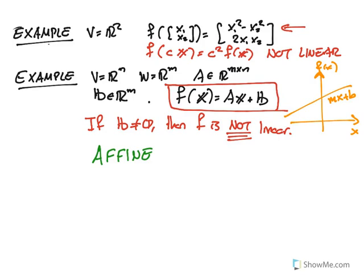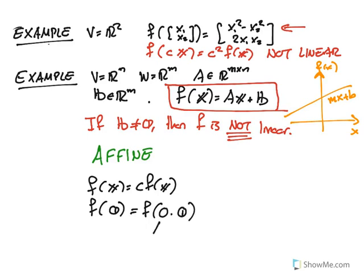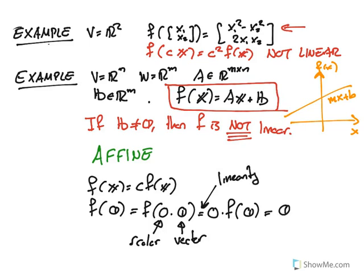And you can see why. Because since f of cx is c times f of x, think for a second about what is f of zero. Where does the origin map? Well, you could write the origin as scalar zero times vector zero. So this is zero times... so here I use linearity. So this must be the zero. So when a map is linear in the sense that we use the term, then the origin has to map to the origin. And for this function we had up here, for this f, you see that f of zero is equal to b. So unless b is zero, this cannot be a linear map.